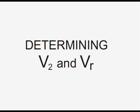V-speeds are determined for each weight, flap setting, pressure altitude, and temperature. V-2 and V-R are first determined with an engine out. Then the initial climb pitch attitude and airspeed are determined for the all engines case. V-1 is determined after V-2 and V-R.